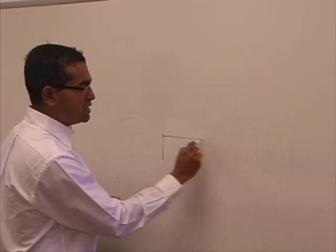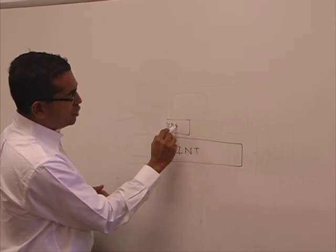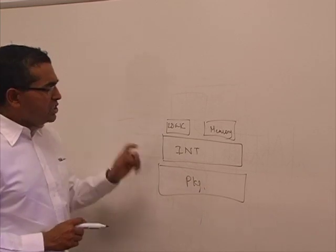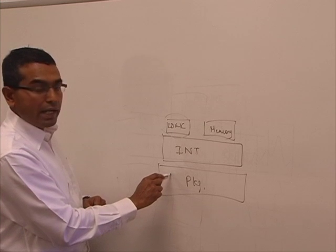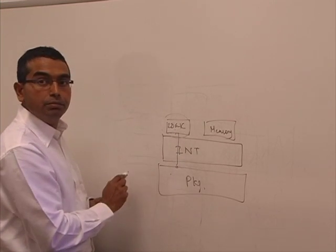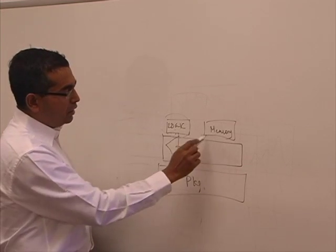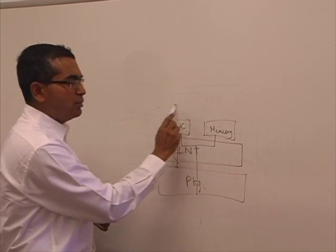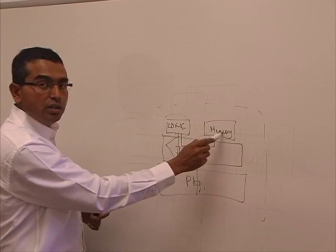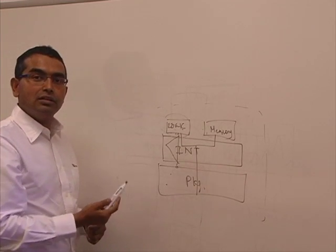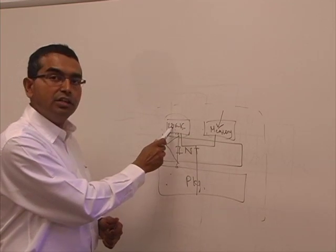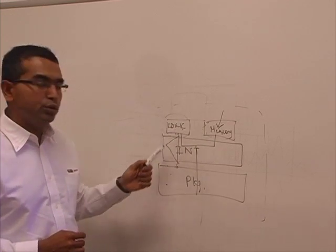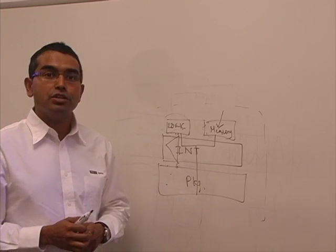Some of the challenges customers face: let's say you have an interposer with a logic die and a memory die sitting next to each other, and the package. The key challenge for the logic designer is that instead of getting power directly from the package, their design now gets powered through the interposer — an additional stack of metals in the path. Some power domains can be shared with the memory, creating noise coupling between the logic and memory dies. We have to simulate power integrity for the whole system — logic, memory, interposer, and package simultaneously. You may not have access to the layout of the memory die, so you need good models that can mimic its electrical behavior. We are working with SI2 to enable standardization of such a model.